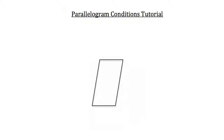Lastly, what if I told you that the top and bottom sides were congruent to each other and the left and right sides were congruent to each other? Would this quadrilateral be a parallelogram? It would, because if two pairs of opposite sides are congruent to each other in a quadrilateral, then that quadrilateral is a parallelogram. Those are the five conditions to keep in mind when determining whether or not you're dealing with a parallelogram.